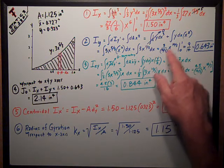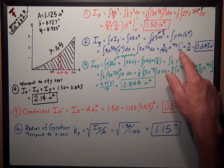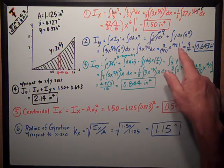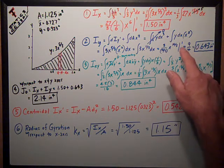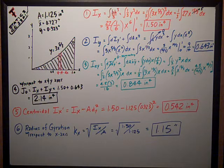Evaluating that, we get 3 over 14 thirds, x to the 14 thirds power. Evaluate from 0 to 1. Of course, at x equals 0, it's 0. So at x equals 1, it's just 9 fourteenths, 0.643 inches to the 4th.